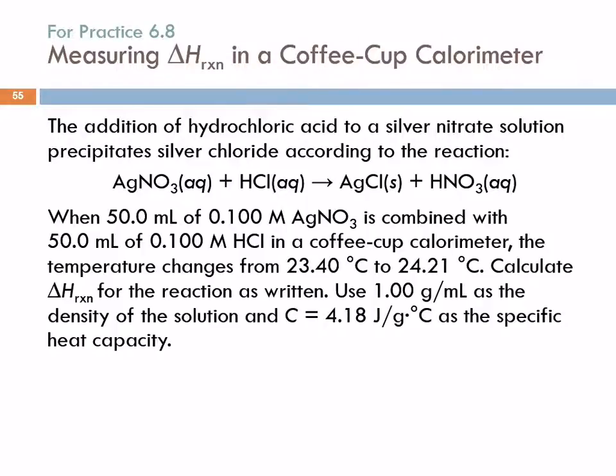This question is so long. The addition of hydrochloric acid to a silver nitrate solution precipitates silver chloride according to the reaction. When 50 milliliters of 0.1 molar silver nitrate is combined with 50 milliliters of 0.10 molar hydrochloric acid in a coffee cup calorimeter, the temperature changes from 23.40 degrees Celsius to 24.21 degrees Celsius. Calculate the heat of reaction for this reaction as written. Use 1 gram per milliliter as the density of the solution and C equals 4.18 joules per gram degrees Celsius as the specific heat capacity.